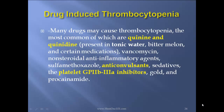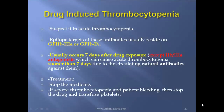Many drugs cause thrombocytopenia, the most common of which are quinine and quinidine, present in tonic water, bitter melon, and certain medicines. Also vancomycin, NSAIDs, sulfamethoxazole, anticonvulsants, sedatives, 2B3A inhibitors, gold, and procainamide may cause thrombocytopenia. The epitope targets of these antibodies usually reside on 2B3A or 1B. This usually occurs seven days after drug exposure, except for 2B3A antagonists, which can cause acute thrombocytopenia sooner than seven days, as there are circulating natural antibodies against them. Treatment: stop the medicine. If severe thrombocytopenia and patient is bleeding, stop the drug and transfuse platelets.